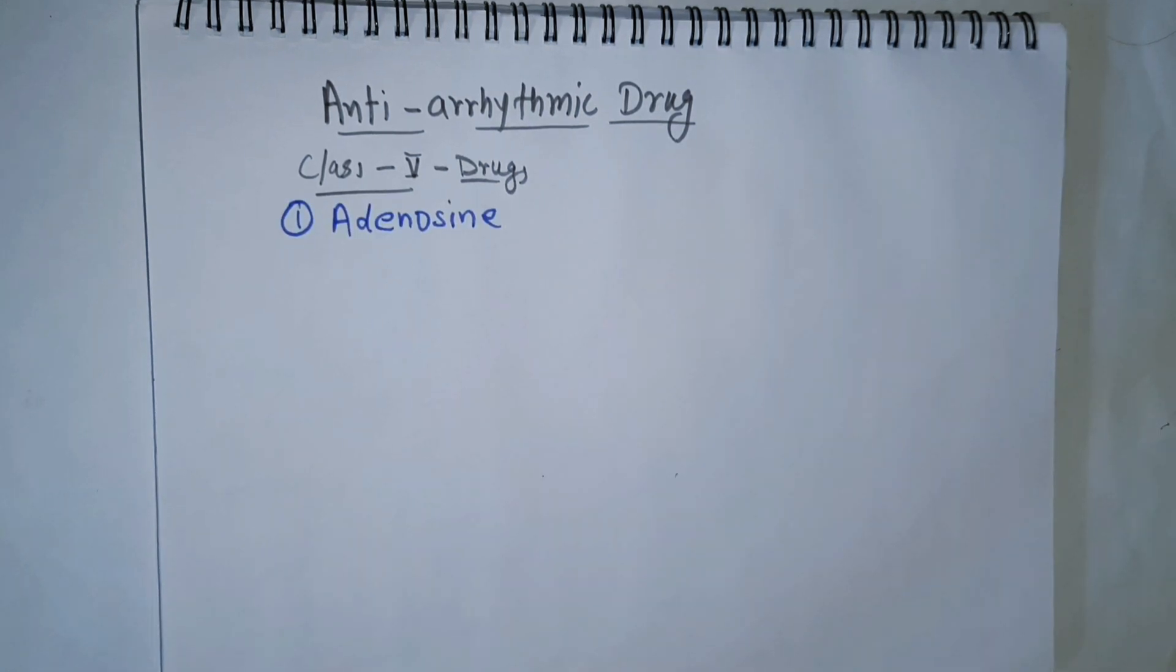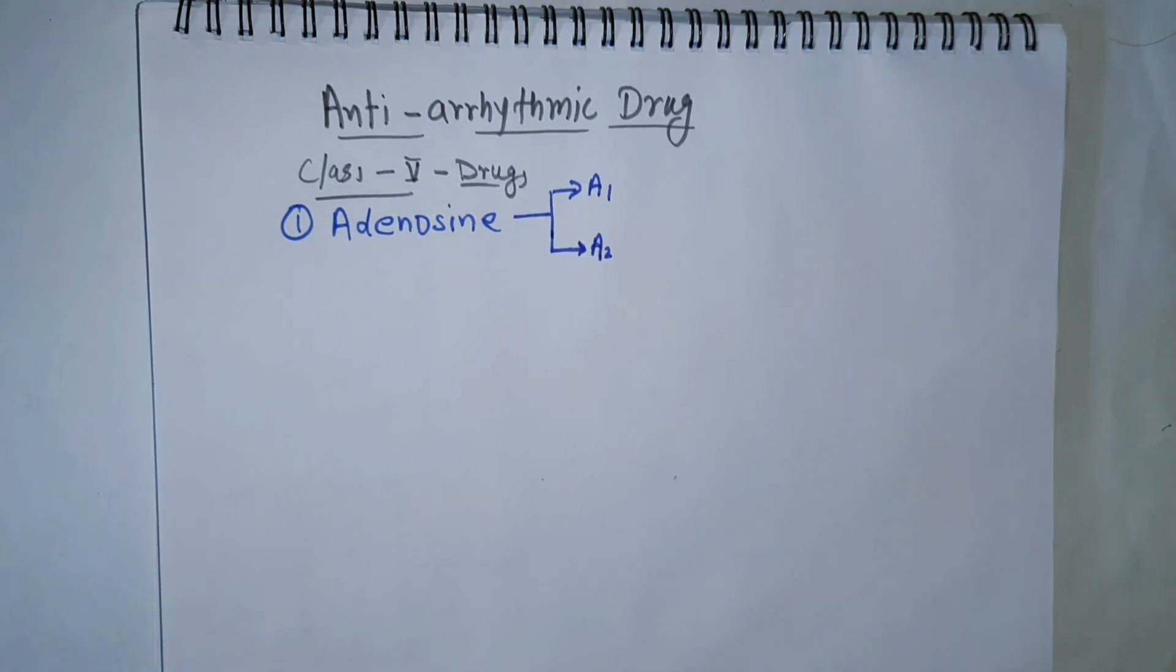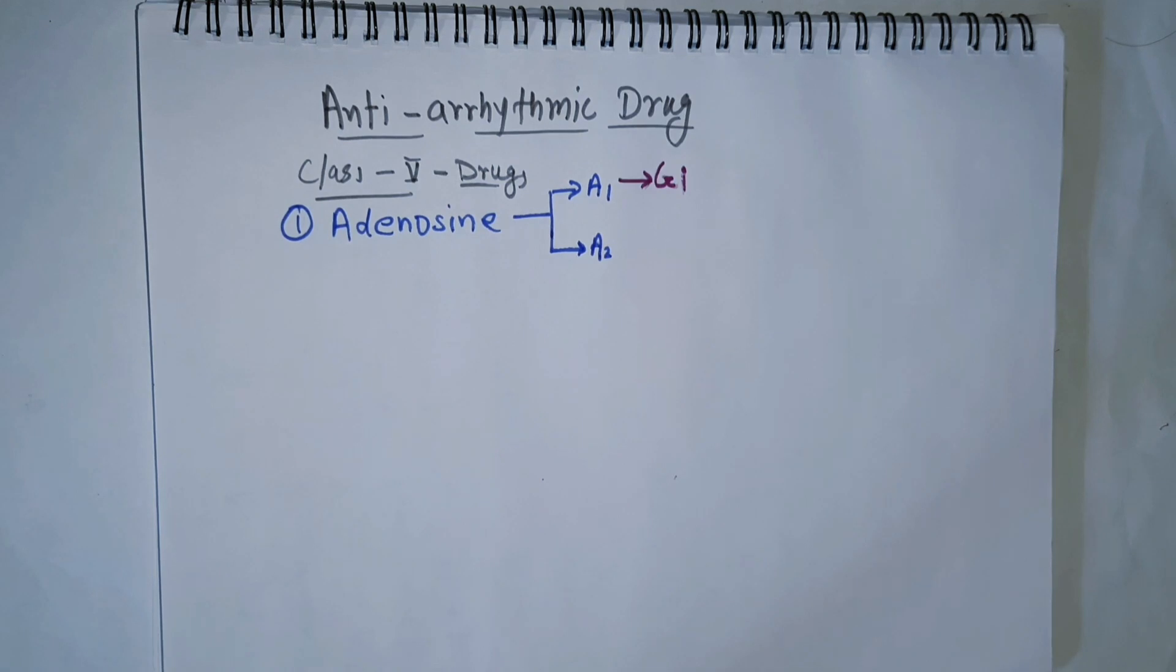Now let's talk about the fifth class of anti-arrhythmic drugs. The first drug in this class is adenosine. There are two types of adenosine receptors: A1 receptors and A2 receptors. A1 receptors are G-inhibitory type receptors.